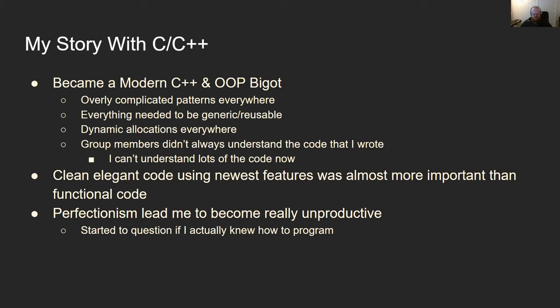Elegant code using reduce features was almost more important than functional code or the code actually working, and this led to problems. It led me down a perfectionist mindset where I would try to architect stuff upfront and come up with the perfect solution — which made me really unproductive, because you can't come up with the perfect solution without knowing the problem properly. It actually led to me questioning if I actually knew how to program, because I was creating so many files and writing so much code, but most of it didn't actually do anything.